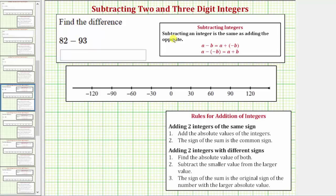We can do this because subtracting an integer is the same as adding the opposite. So because subtracting b is the same as adding negative b, subtracting 93 is the same as adding negative 93. So we can write 82 minus 93 as 82 plus negative 93.